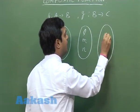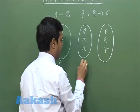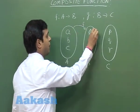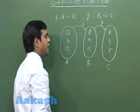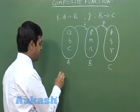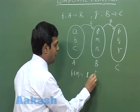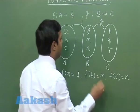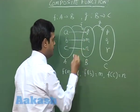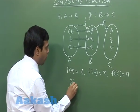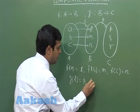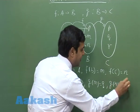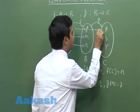And set C has elements p, q, r. This is set B and this is set C. Now we define a function from A to B and another function from B to C as: f(a) = l, f(b) = m, f(c) = n. Similarly, g(l) = p, g(m) = q, g(n) = r. We can relate it in this manner.